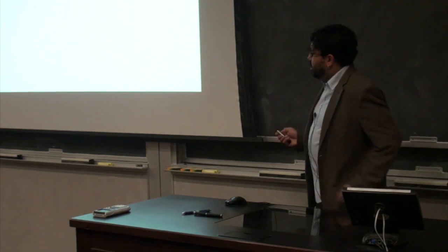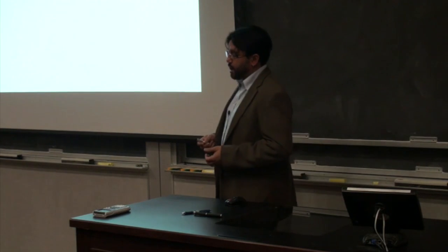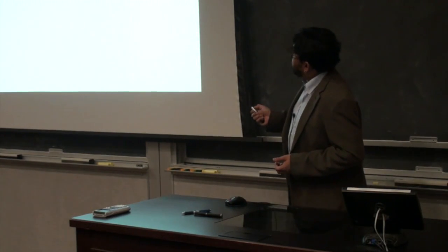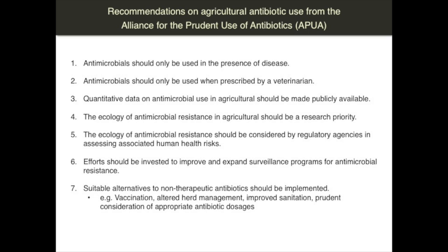What can we do about this? It turns out there's an advocacy group called the Alliance for the Prudent Use of Antibiotics. They promote the prudent use of antibiotics both in the clinic and in agriculture. They have very straightforward suggestions that have largely fallen on deaf ears with regulatory agencies: antibiotics should only be used in the presence of disease; they should only be used for animals when prescribed by a veterinarian — essentially most agricultural antibiotic use is over the counter; and the data on use should be made publicly available.